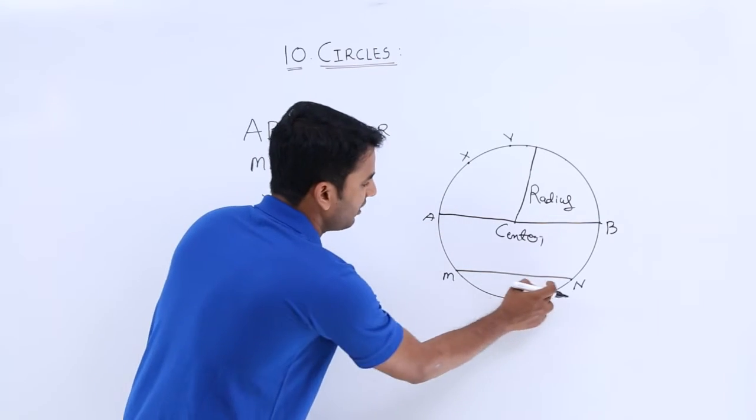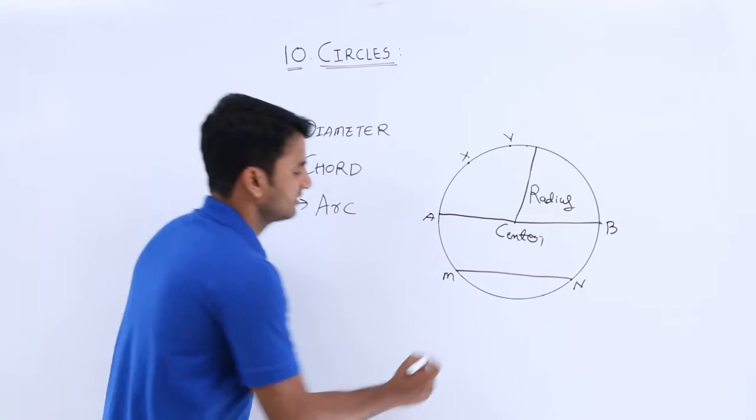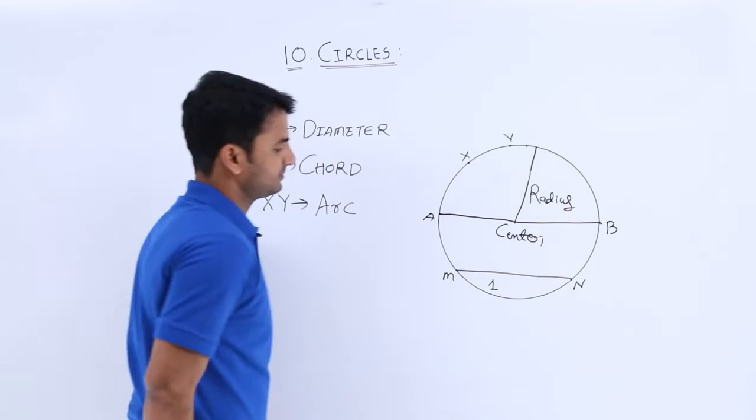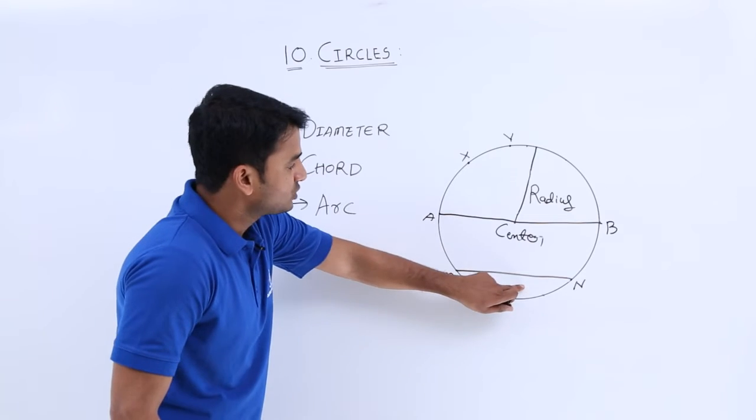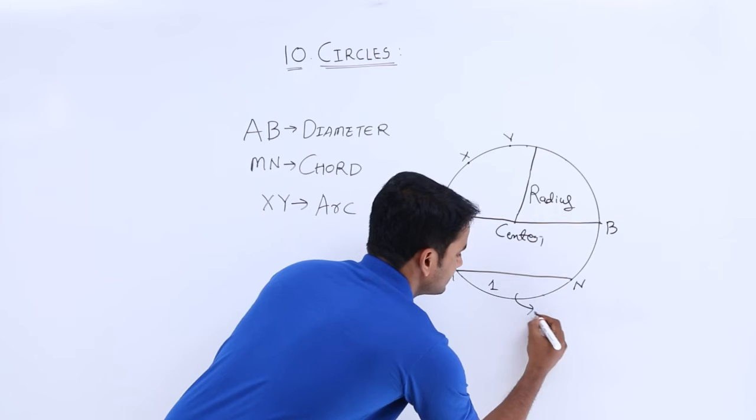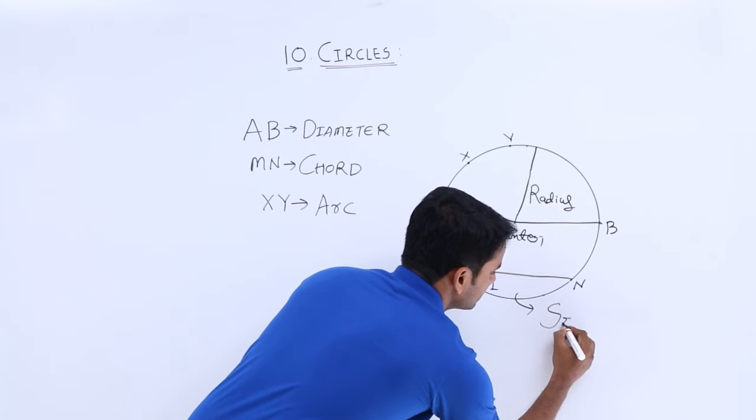Here, this chord divides the circle into two portions. This is part 1 and this entire portion is part 2. And these two different parts which are divided by the chord are considered as segments.